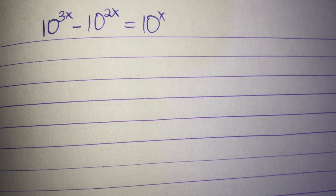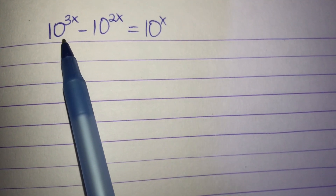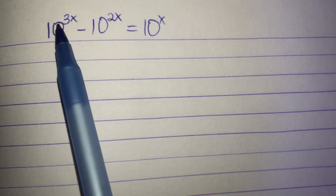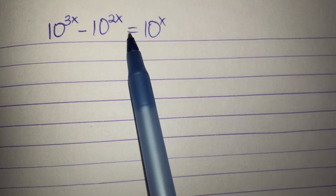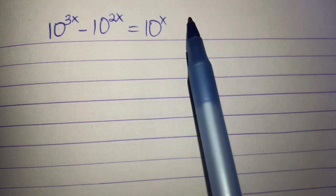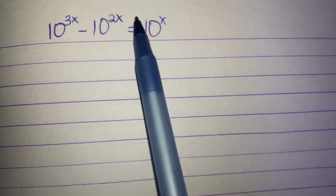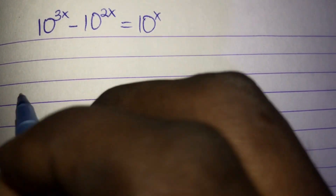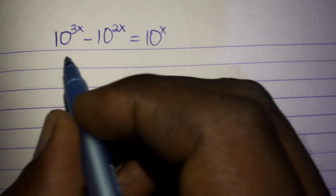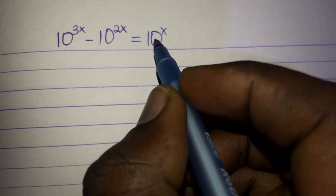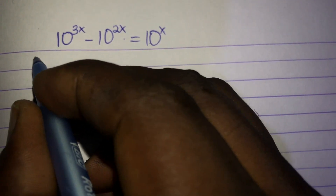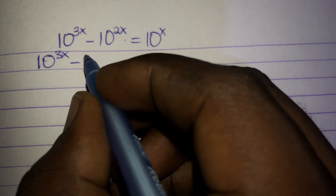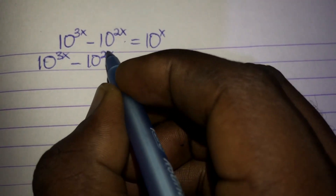Hi, welcome to this channel. We have this exponential question: 10 exponent 3x minus 10 exponent 2x equals 10 exponent x. We're going to find the value of x. Let's get started. I'll begin by bringing this term over and setting the equation to zero, so we have 10 exponent 3x minus 10 exponent 2x minus 10 exponent x equals zero.